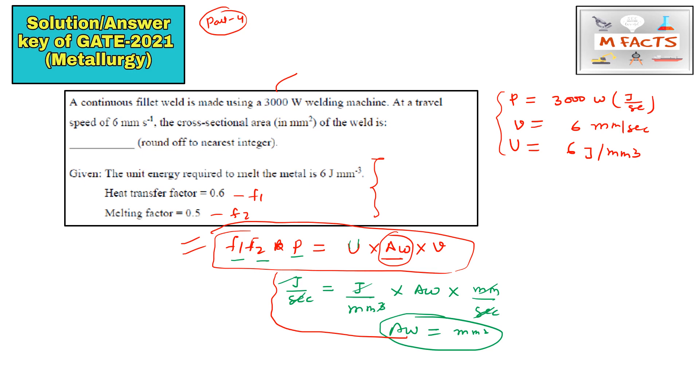Now what we need to do, we will put these values, these given values here in this formula. I will find this Aw. So f1 is 0.6, f2 is 0.5, power value is 3000, and u is also given, that is 6 joule. Aw is we need to find, and this velocity is also given. So Aw will be equals to 900 by 36.